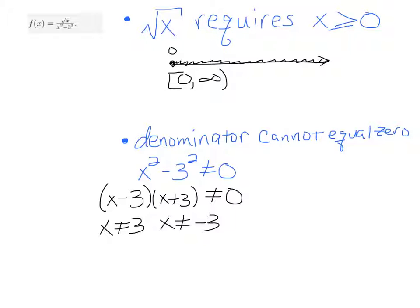Now let's combine this condition with the one above. We can discard x ≠ -3 because x has to be greater than or equal to 0. So combining these two conditions and graphing it out, x has to be greater than or equal to 0, but we have to exclude 3. We shade everything in except 3.